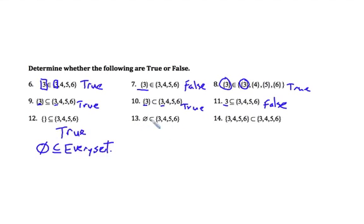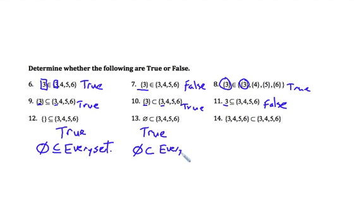In number 13, we have the null set again in different notation. It asks: is the null set a proper subset of {3, 4, 5, 6}? We already know the null set is a subset of every set. The only thing that makes it proper is if they are not equal. Is the null set equal to {3, 4, 5, 6}? No — so this is true. We can state: the null set is a proper subset of every set except itself. For the last one, the set {3, 4, 5, 6} as a proper subset of {3, 4, 5, 6} — these sets are equal, and if two sets are equal they cannot be proper subsets, so this is false.